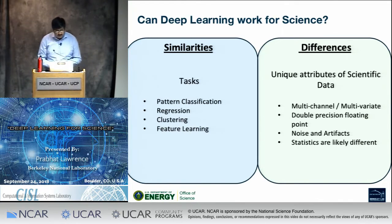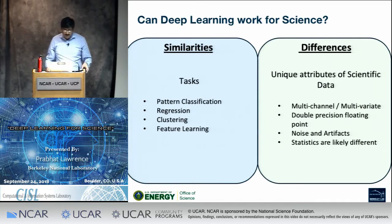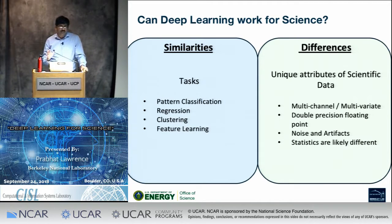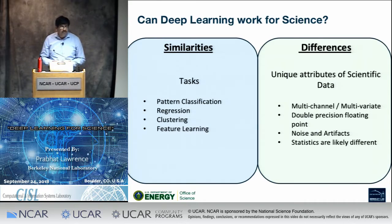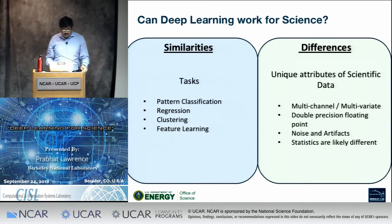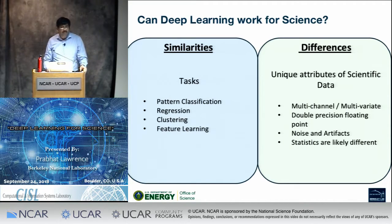Five years ago we asked ourselves: deep learning seems to be working for computer vision, speech recognition, robotic and control systems — can it work for science? There are certainly similarities in the kinds of problems we need to solve in science, but there are some differences. Scientific data is different from commodity RGB images: we typically have many more channels corresponding to many more variables, higher precision, different noise and artifacts. Most importantly, the statistics corresponding to clusters or classifiers is likely different in scientific data compared to commercial datasets. By the end of the talk, the message is that deep learning can work in the scientific context as well.